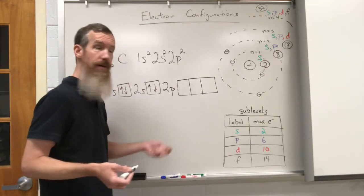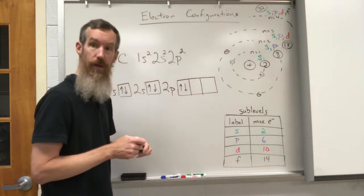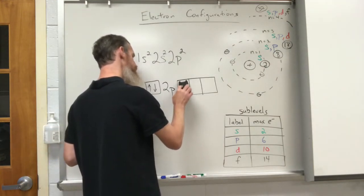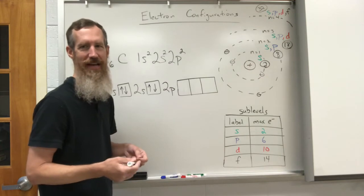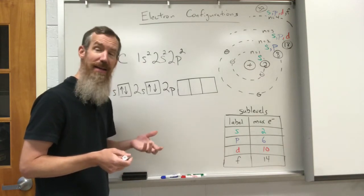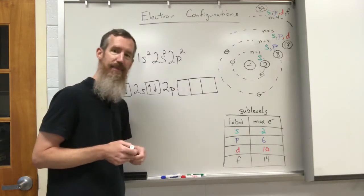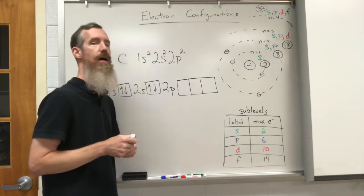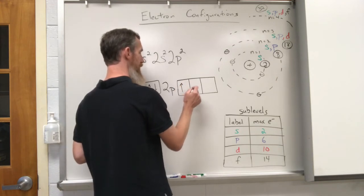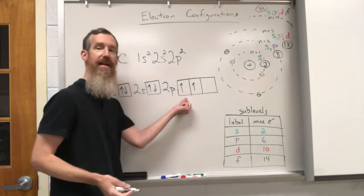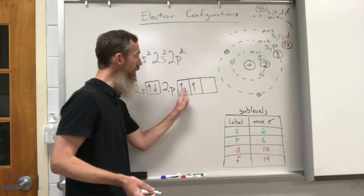Now I need to put in the two electrons for 2p — but the obvious way of putting them both in one box is wrong. Don't blame me — blame nature. When electrons start to fill a sub-level, there is a rule: every orbital must first be filled with one electron before pairing begins. That means you cannot draw any down arrows until you've drawn all the up arrows.